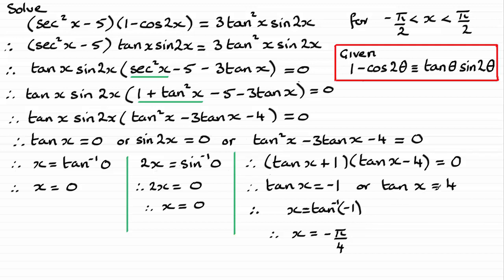Now, when it comes to tan x equals 4, that's not so obvious. You're going to need to use your calculator there. Make sure you're in radians mode. Take the inverse tan of 4 and you get x equaling 1.3258 and so on. So,